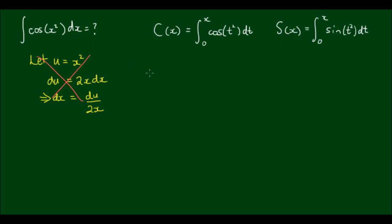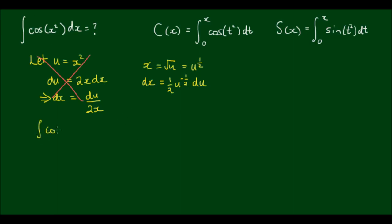However, we can still use this substitution. If u equals x², then x equals the square root of u, which equals u to the power of one half. And dx with respect to u is one half of u to the power of negative one half. We can then substitute this in, so the integral of cos(x²) dx equals the integral of cos(u) times one half u to the power of negative one half du.